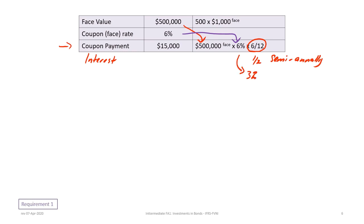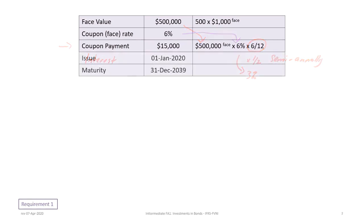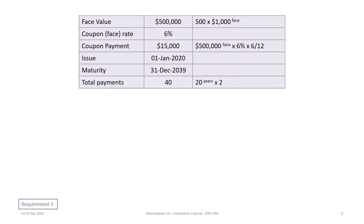The bond is issued on January 1, 2020 and matures on December 31, 2039, making it a 20-year bond. Since the bond pays interest semi-annually, there are two payments per year times 20 years, for a total of 40 payments.